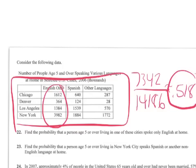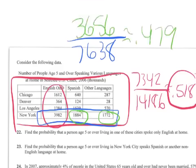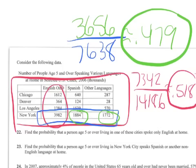Now 23 says find the probability a person of age five or over living in New York. So we're just isolated by looking at these totals here. So we want all New Yorkers. If you add that up, by the way, all the New Yorkers is 7638. How many of them speak Spanish or another non-English language? Spanish or another non-English is right there. If you add that up, it's 3656. It's going to be approximately .479. So about 47.9% of the people in New York spoke a language other than English.